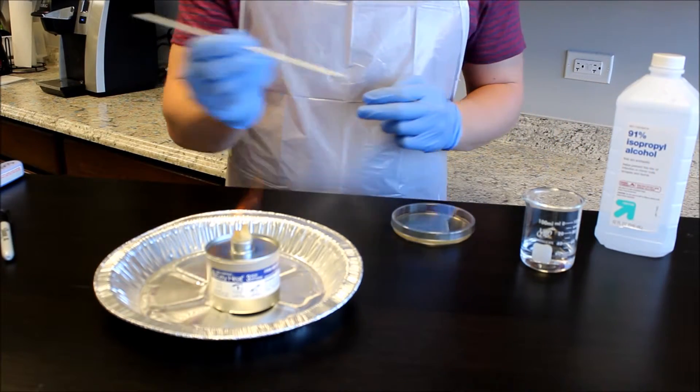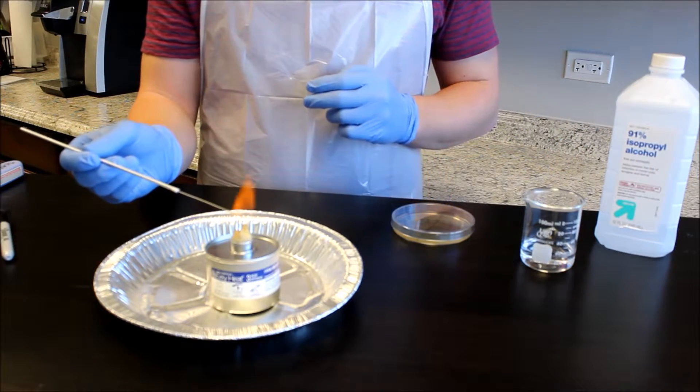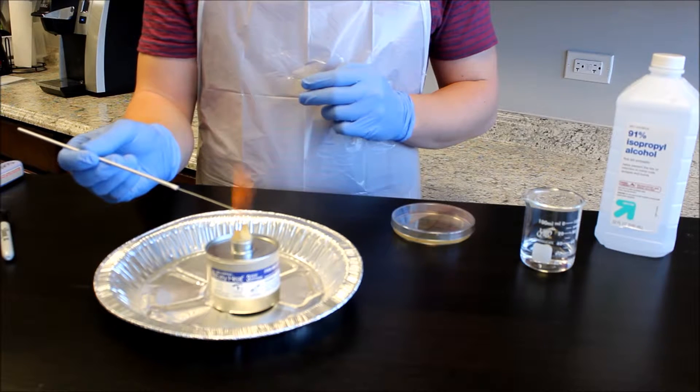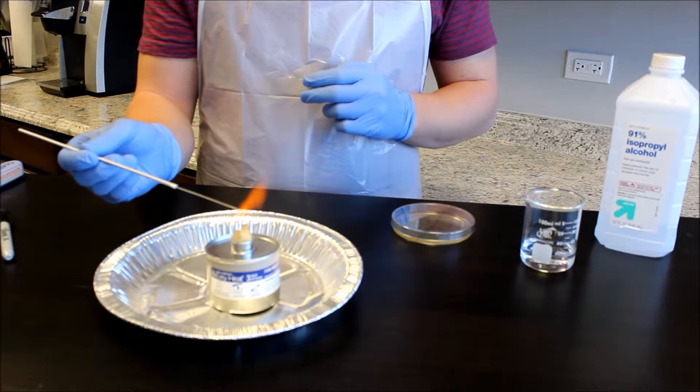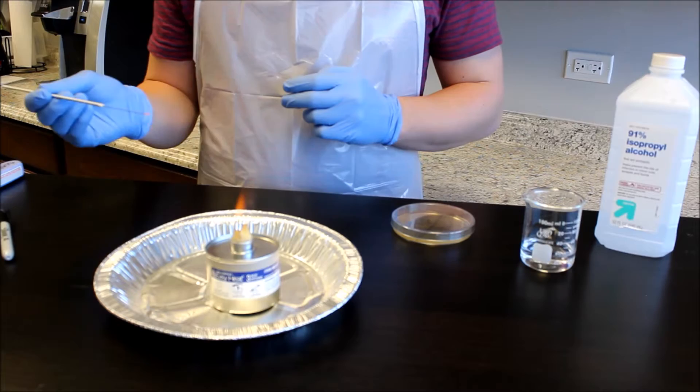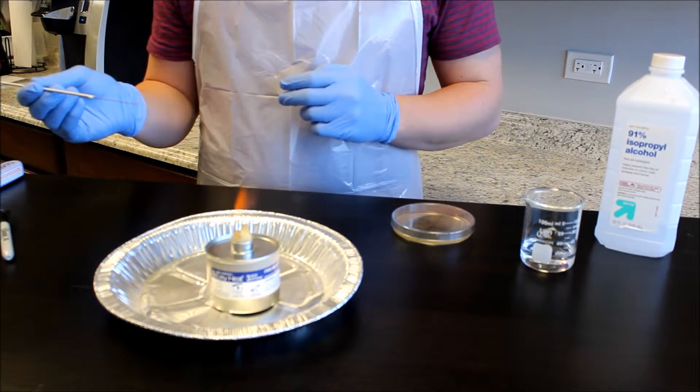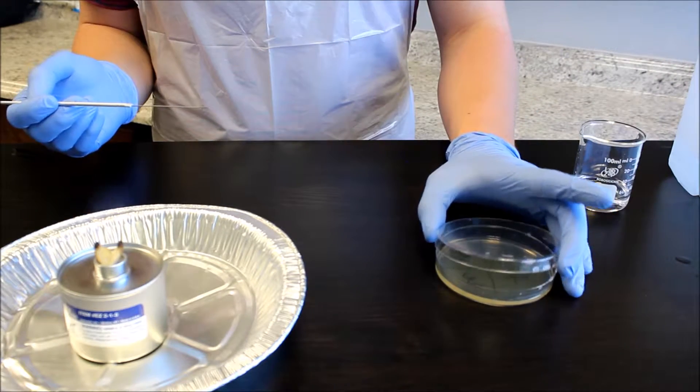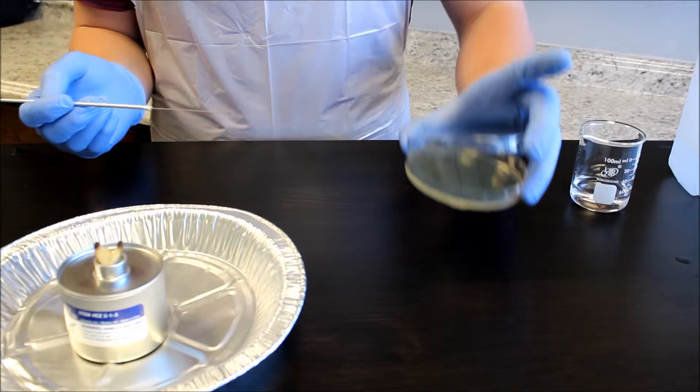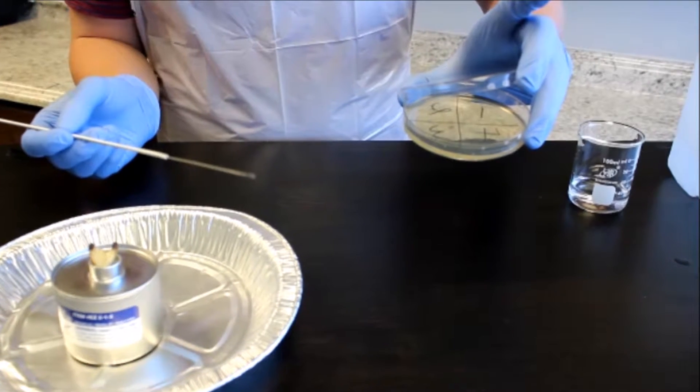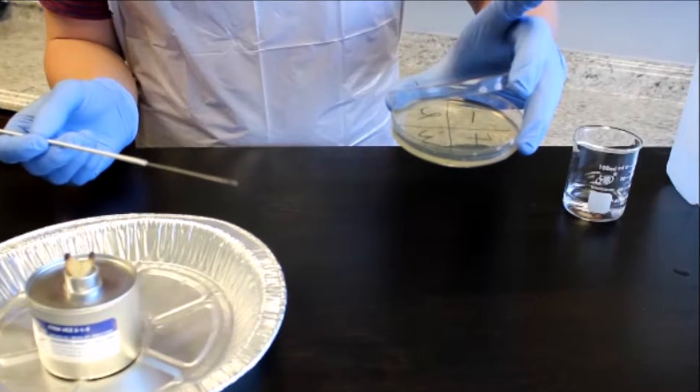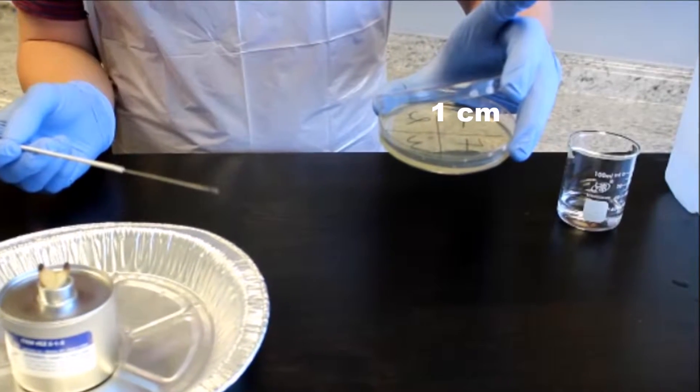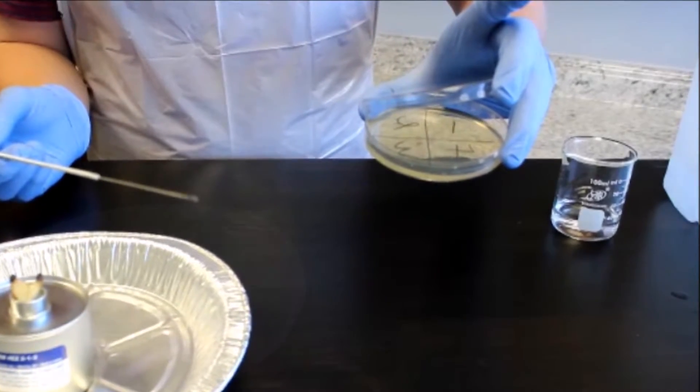Remove the loop from the alcohol and position so the loop is in burner flame. Hold in flame until metal glows red. Remove from flame and allow loop to cool for 30 seconds. While holding the cooling loop in the dominant hand, grasp the agar plate with the other hand, tilting the lid such that a 1 cm space is opened above the first quadrant.